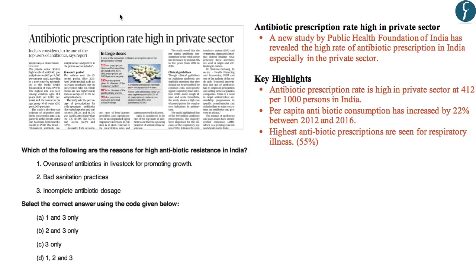The first question is from a news published on page 19: 'Antibiotic Prescription Rate High in Private Sector.' A new study by the Public Health Foundation of India revealed a high rate of antibiotic prescription — 412 per 1000 persons — especially in the private sector, with per capita antibiotic consumption increasing by around 20% between 2012 and 2016. Highest antibiotic prescriptions are seen for respiratory illness like tuberculosis. Which of the following are reasons for high antibiotic resistance in India? The correct answer is D — all three: overuse of antibiotics in livestock, bad sanitation practices, and incomplete antibiotic dosage.